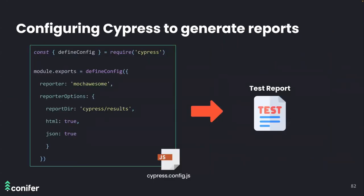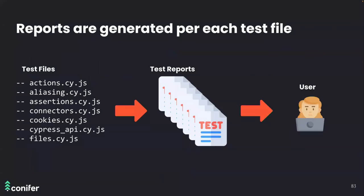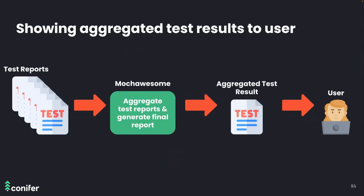We can create an HTML report using Cypress's built-in reporters — unlike terminal output, these reports can be retrieved and sent to the user. However, reports are generated per test file, meaning the user would have to go through potentially hundreds of reports. We solved this using a custom reporter plugin called Mocha Awesome, which creates reports and has a feature to aggregate them. Before aggregating individual test results, we need them in one location.